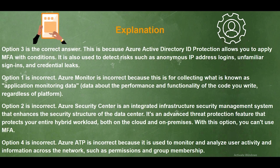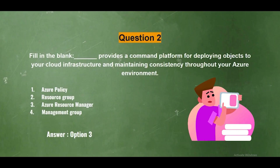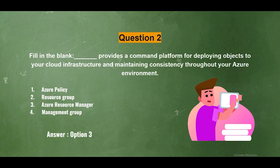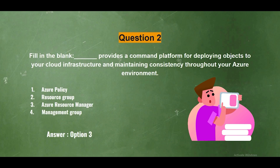Question 2. Fill in the blank. Dash provides a command platform for deploying objects to your cloud infrastructure and maintaining consistency throughout your Azure environment. The options are: Number 1, Azure Policy; Number 2, Resource Group; Number 3, Azure Resource Manager; Number 4, Management Group. And the answer is option three.